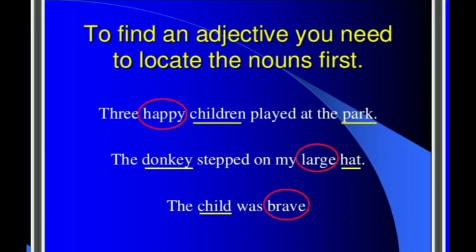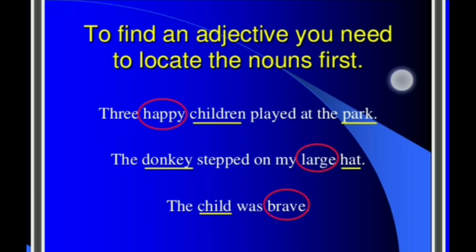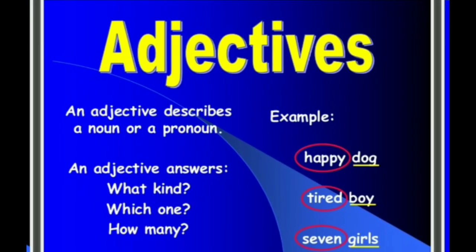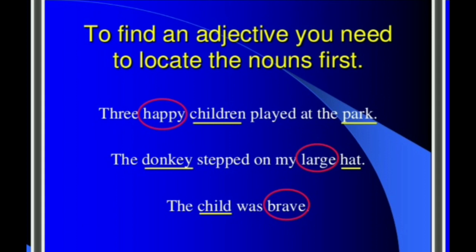To find an adjective, you need to locate the nouns first. In yellow I have underlined the nouns, and the red circles are the adjectives. So the first step is always to identify the noun in the sentence. For example: 'Three happy children played at the park.' The nouns are 'children' and 'park.' What kind of children played at the park? The answer is 'happy,' so 'happy' becomes the adjective.